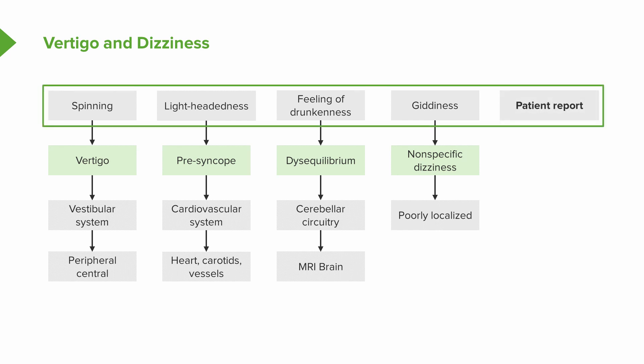When approaching patients or clinical vignettes presenting with dizziness, I like to think about this table. I start with the patient's report — how does the patient describe their dizziness? Is it spinning, lightheadedness, dizziness, or giddiness? Patients don't always fall neatly into those four categories, but I'm really trying to interrogate which category of dizziness the patient is describing.